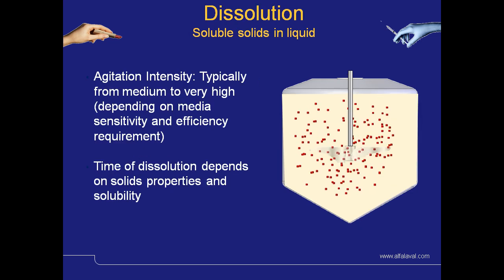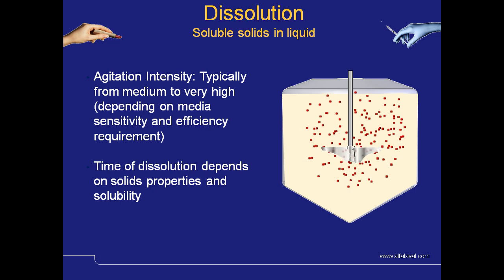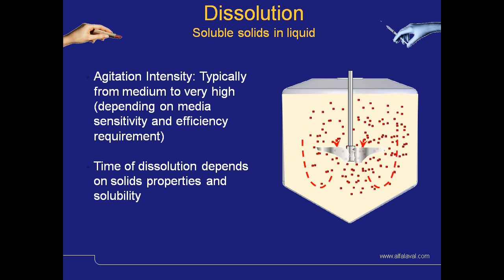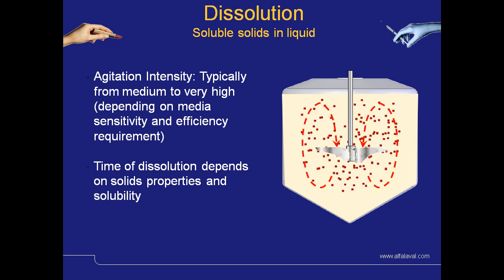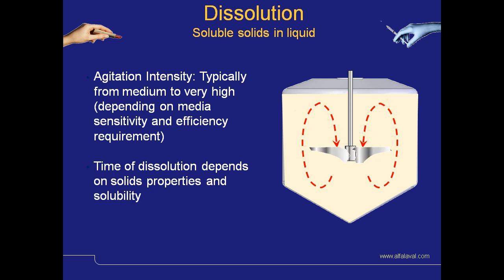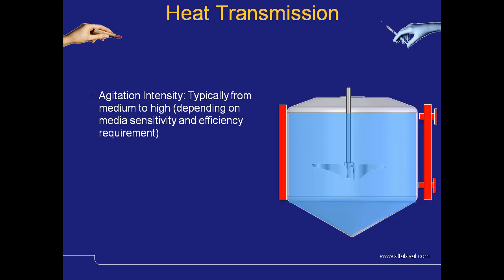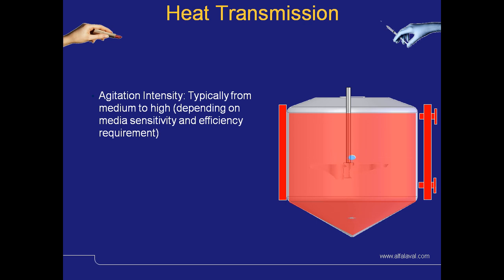When it comes to mixing soluble solids into liquids, the agitation intensity can vary depending on the media sensitivity and the efficiency requirement of the process. The dissolution of the solids depends on their property and solubility. For heat transmission through different fluids, typically the agitation intensity will be medium to high, again depending on media sensitivity and the efficiency requirement for the process.